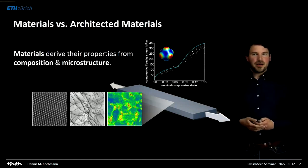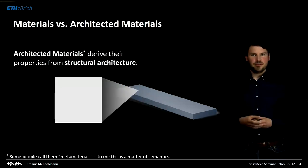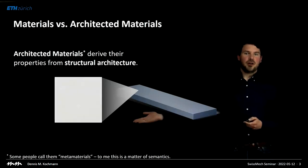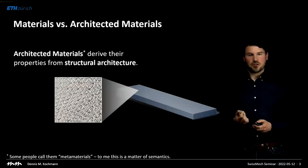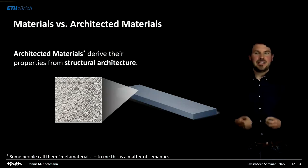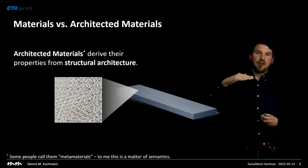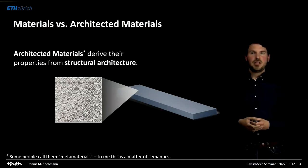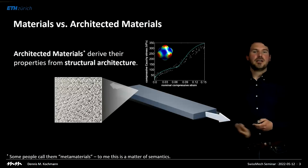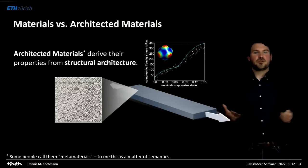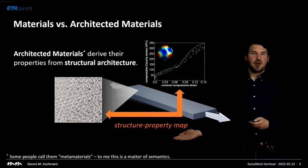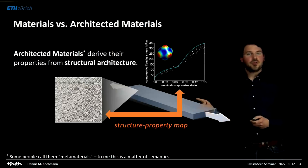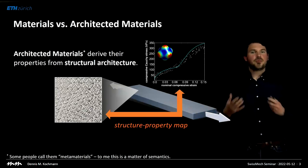Architected materials — some people call them metamaterials, to me that's a matter of semantics — have similar principles but their general makeup is quite different. Architected materials derive their properties primarily from structural architecture. If we zoom in we're not necessarily going to find what we typically find in materials, but we'll see structural architecture — trusses, plates, or shells — at an intermediate level: well above the grain/dislocation network of the base material but well below the macroscopic scale of our application. If you pull on this, you can again map mechanical properties: stiffness, strength, impact absorption, toughness. The end goal is to find the structure-property map.